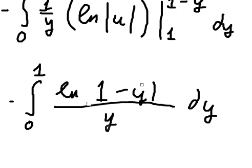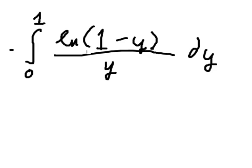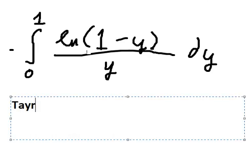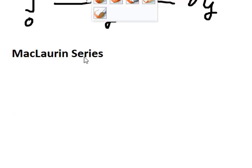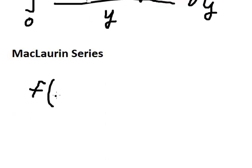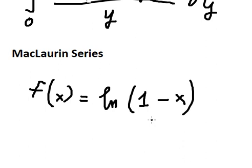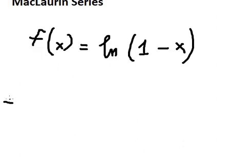Evaluating at the bounds: ln of 1 gives zero. In this situation I'll cancel the absolute value and use single brackets. Now we need to create the Maclaurin series. I will set F equal to ln of 1 minus s.